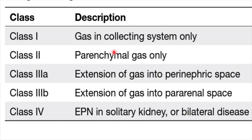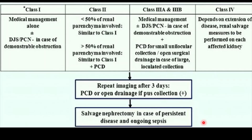To summarize in table format: Class 1 — gas in the collecting system only. Class 2 — gas in the renal parenchyma. Class 3 is divided into 3a (gas in the perinephric space, just below the capsule) and 3b (gas extending into the pararenal space, outside the kidney). Class 4 — emphysematous pyelonephritis in a solitary kidney or bilateral involvement.